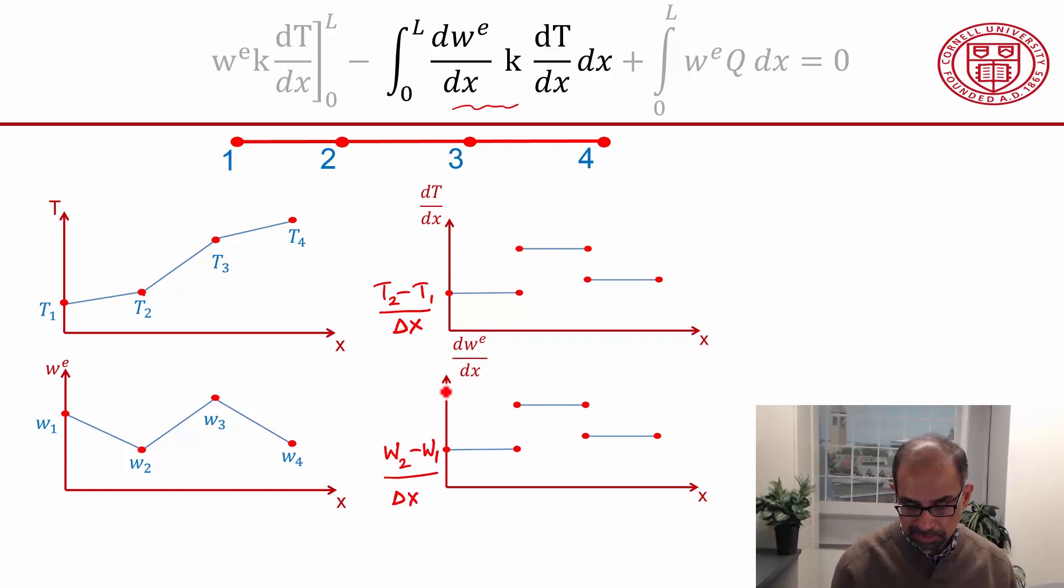And then I need to plug these variations in here, and let's say I'm doing it over the first element. This is constant, this is constant, and k is constant. So I can bring all of this out of the integral and I'll just get integral of dx over the element which is the length of the element.